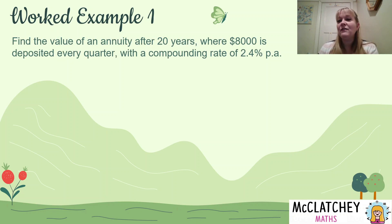Let's get into that first worked example. Find the value of an annuity after 20 years, where $8,000 is deposited every quarter with a compounding rate of 2.4% per annum. Now, before I go any further, we have talked about two or three different types of annuities. One of those types of annuity is where we're putting money into an account on a regular basis with the aim of saving towards something for the future. So we're depositing money in. So look for that keyword deposit.